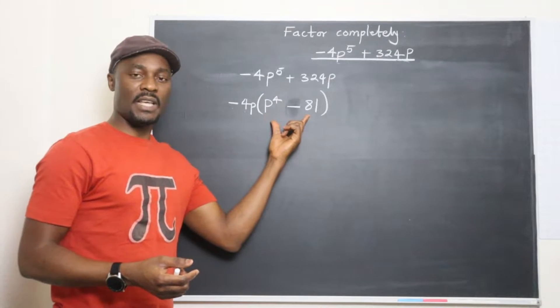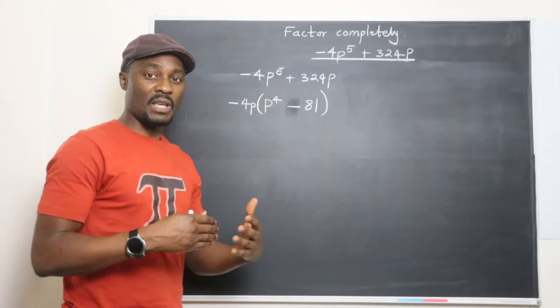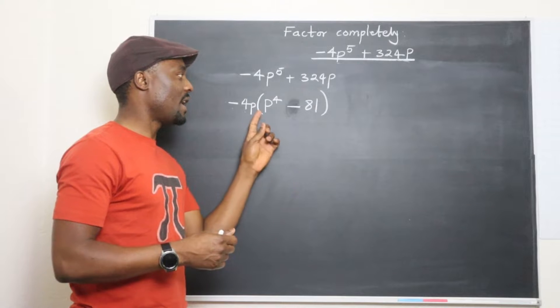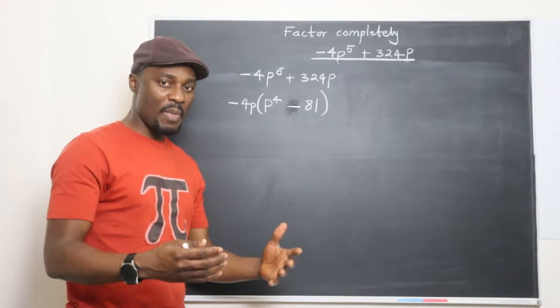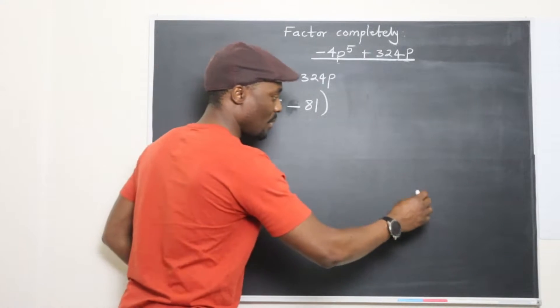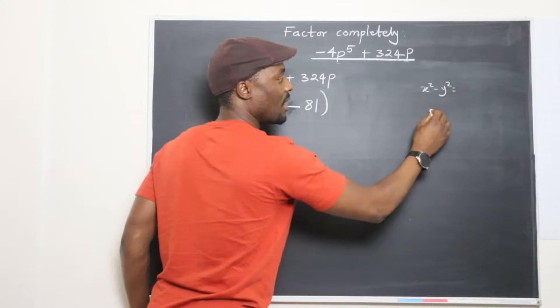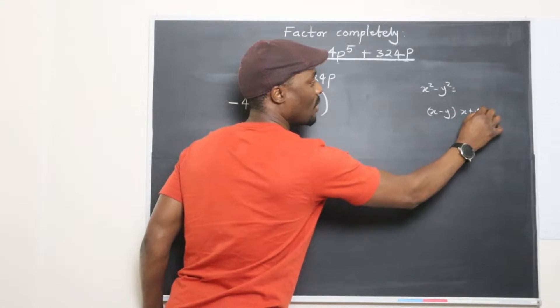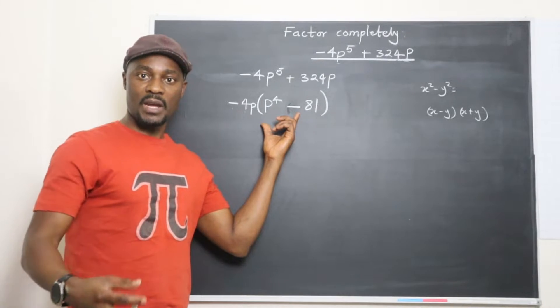What can you do to what's inside? Every time there are two terms you're subtracting from each other and you notice that one of them can be squared, you quickly think about the difference of two squares. Remember, difference of two squares is when you have x squared minus y squared, it becomes x minus y and x plus y.